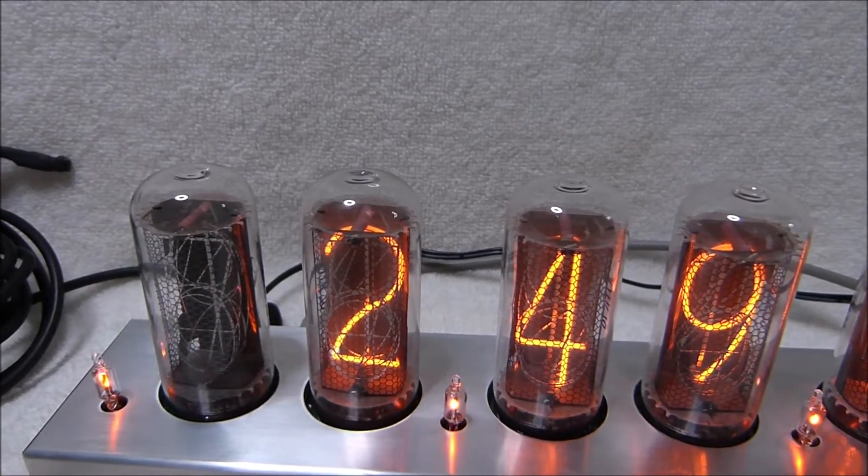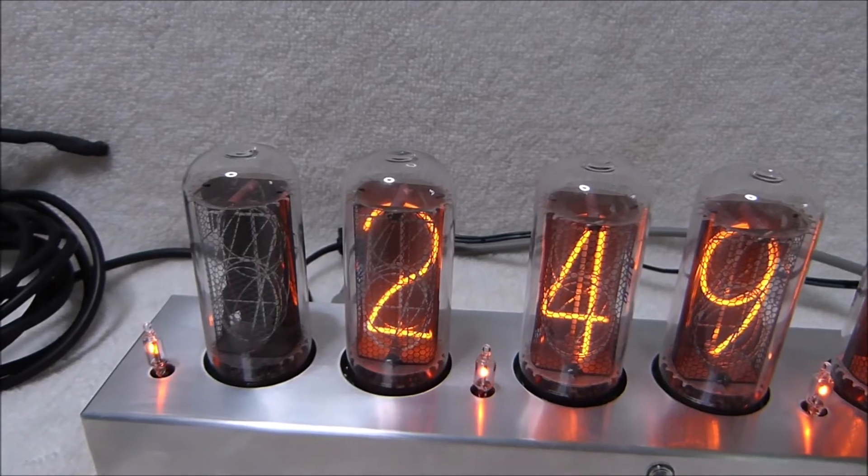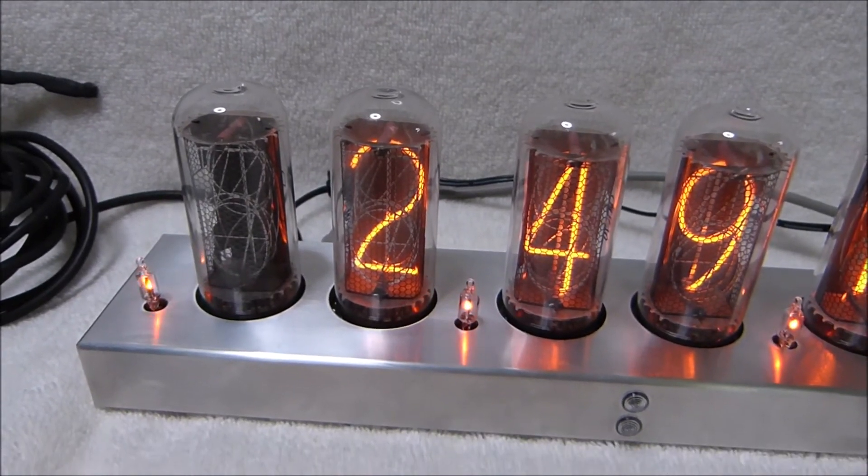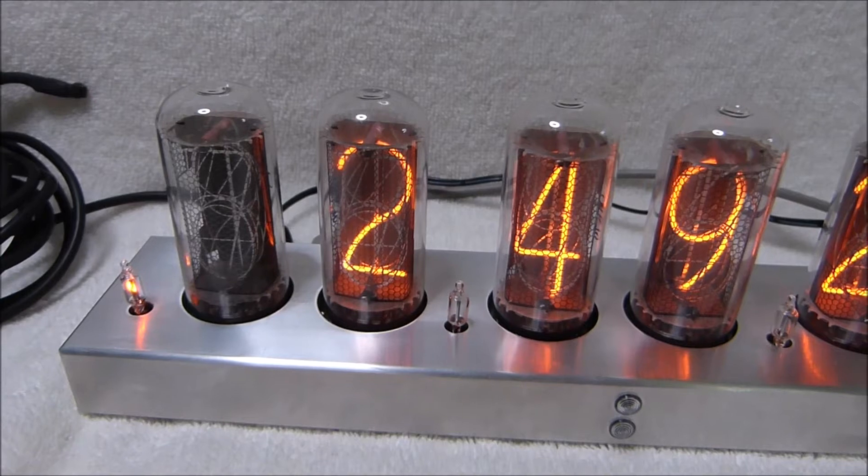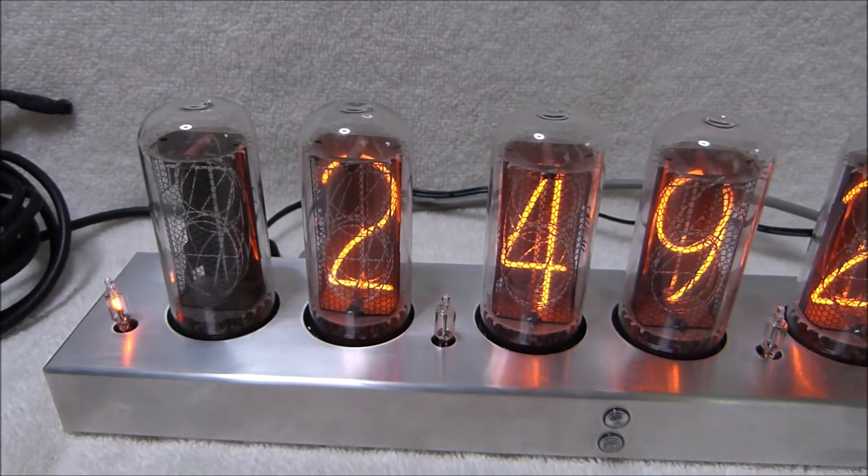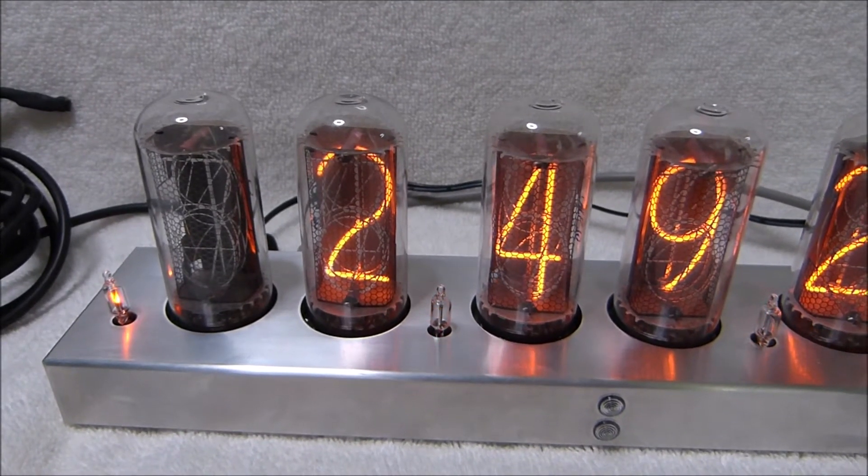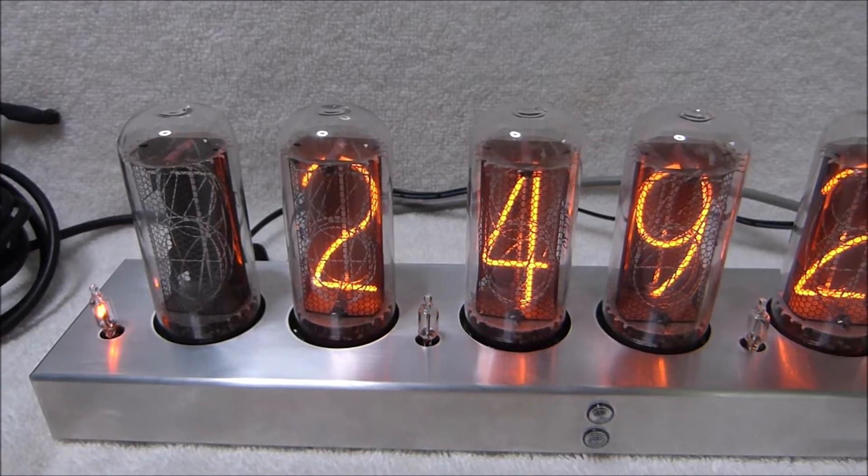As designed, this clock had a 6.8 kilo ohm resistor from the anode of each tube to the high voltage supply, which is supposed to produce 170 volts. In order to extend the life of both the tubes and the clock itself, I decided to reduce the current supplied to the Nixie tubes.